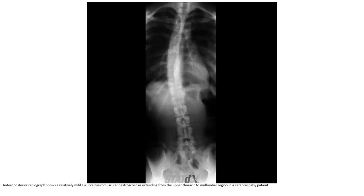AP radiograph showing a relatively mild C-curve neuromuscular dextroscoliosis extending from the upper thoracic to mid-lumbar region in a cerebral palsy patient.